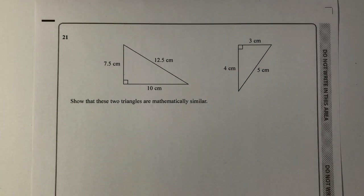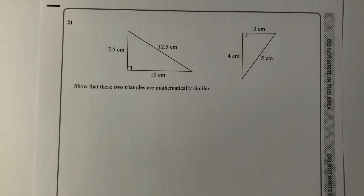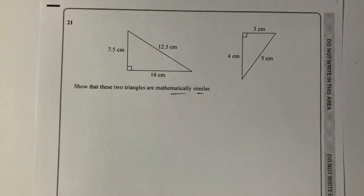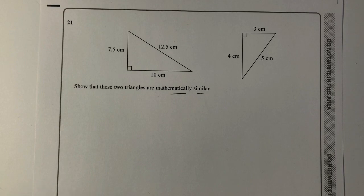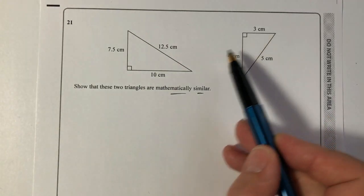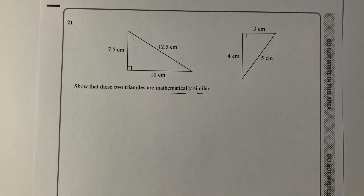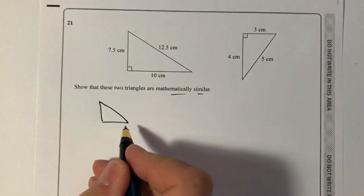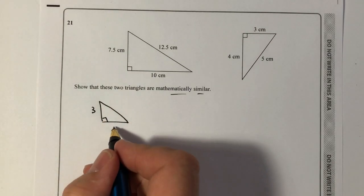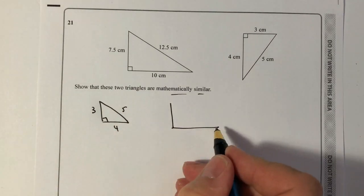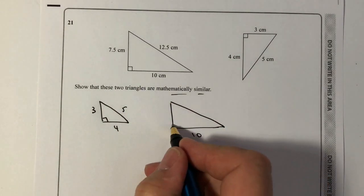Question number 21 asks us to show that these two triangles are mathematically similar. What we mean by that is that one is identical to the other one by some sort of scale factor. So it's bigger than the other one, but the angles remain the same. What they've done with this is they've drawn it slightly differently, but I think I would correct them a little bit and I would draw firstly the triangle the right way round, because I think it's then a little bit clearer to understand what's going on.